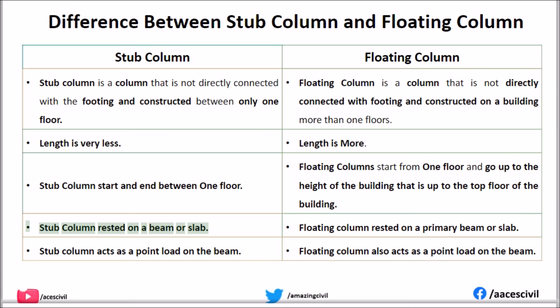Stub column rests on a beam or slab, while floating column also rests on a primary beam or slab. Stub column acts as a point load on the beam, and floating column also acts as a point load on the beam.